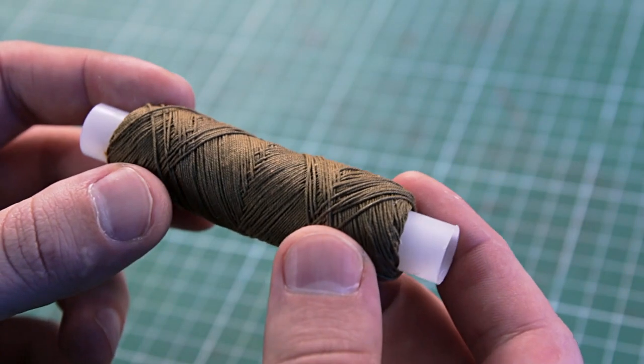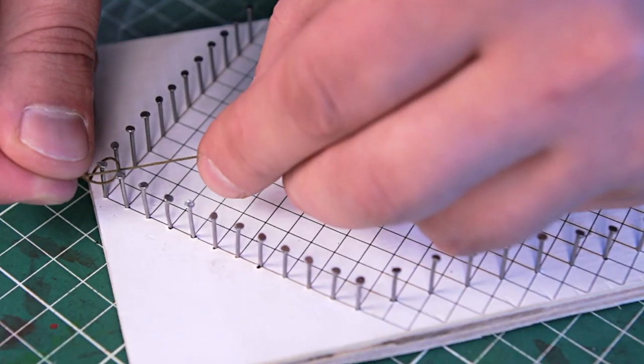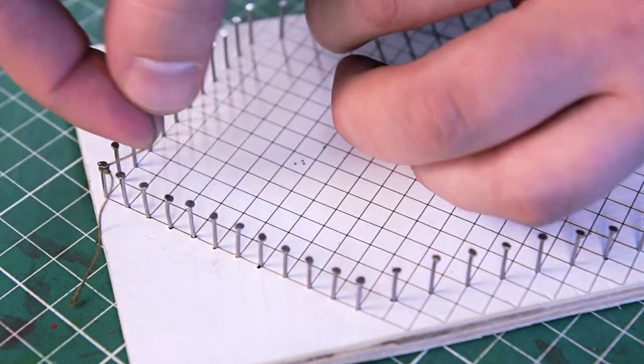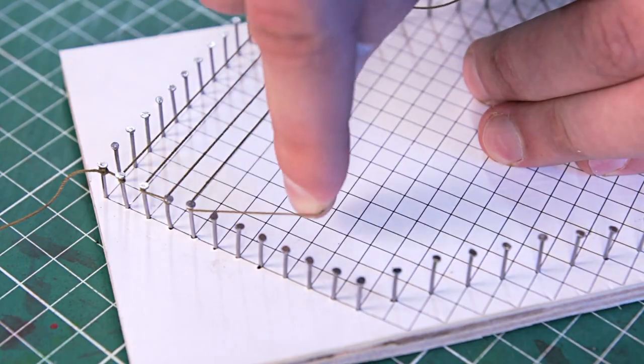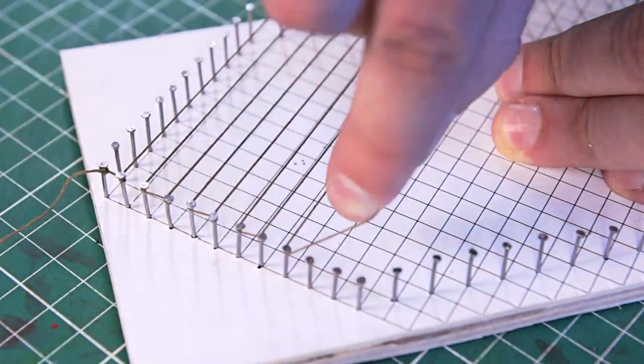Now I will take ordinary linen thread, quite thick. I tie them to the nail and start weaving. It is important that the thread is always to the left of the nail. It didn't take long. In a couple of minutes I already had half of it ready.